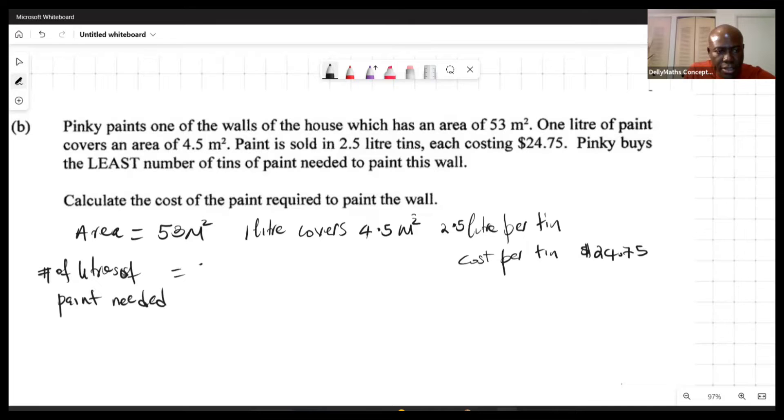So we want to write down that we intend to find out the number of liters of paint needed. So it's all about this area, which is 53 meters squared. We want to divide that by 4.5, because we're saying that for each 4.5 meter surface covered, it's going to be 1 liter. So 53 divided by 4.5 will give us about 11.8 liters that will be needed.